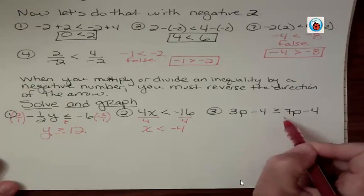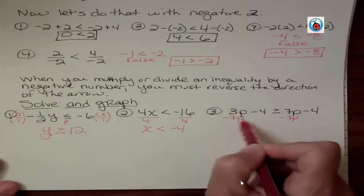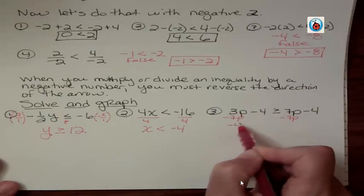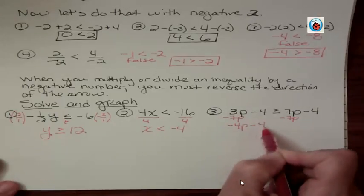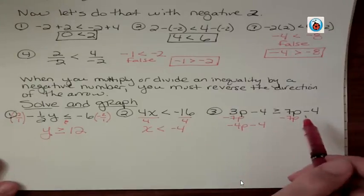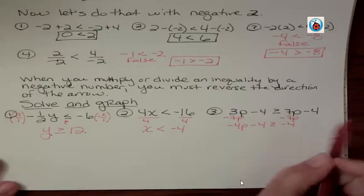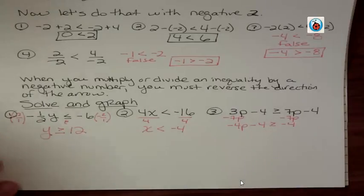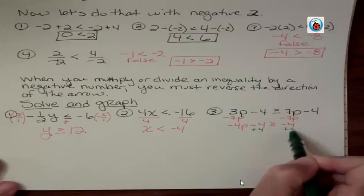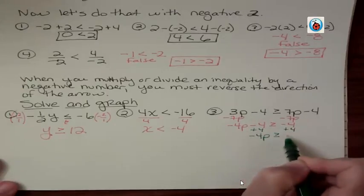Number three, I'm going to move those variables together by subtracting 7p on both sides. It's 3p minus 7p is negative 4p. Would I flip the arrow now? I just subtracted something. No. Addition and subtraction, you never flip the arrow. It's only that very last step when you either multiply or divide. Now I'm going to add 4 to both sides.